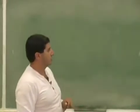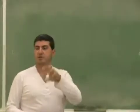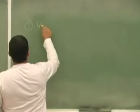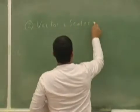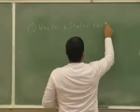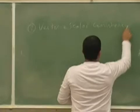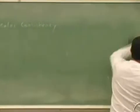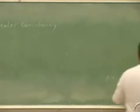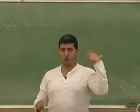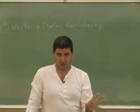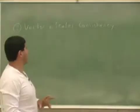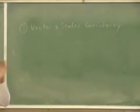I had it over there on the board earlier: vector and scalar consistency. Here's what I mean by that. We already saw that whenever you have a formula or answer, the units have to work out. Another thing that has to work out is vector and scalar consistency.